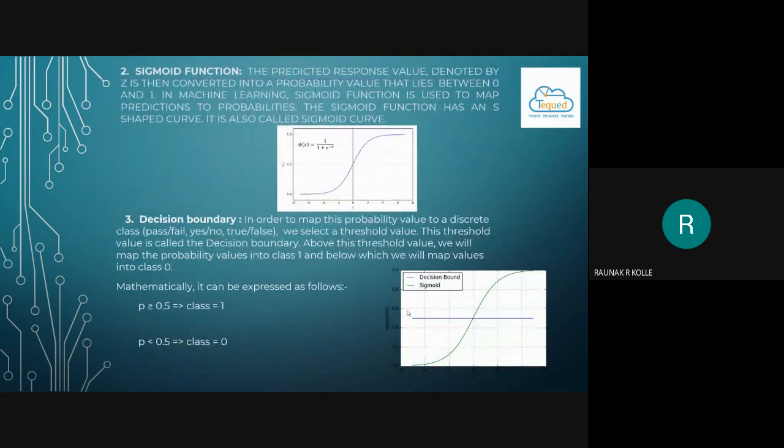Sigmoid function. The predicted response value denoted by z is then converted into a probability value that lies between 0 and 1. In machine learning, sigmoid function is used to map predictions to probabilities. The sigmoid function has an S-shaped curve, and this curve is often called sigmoid curve.